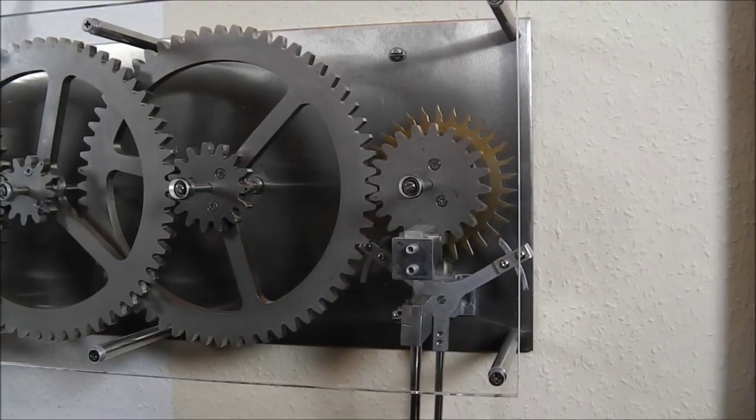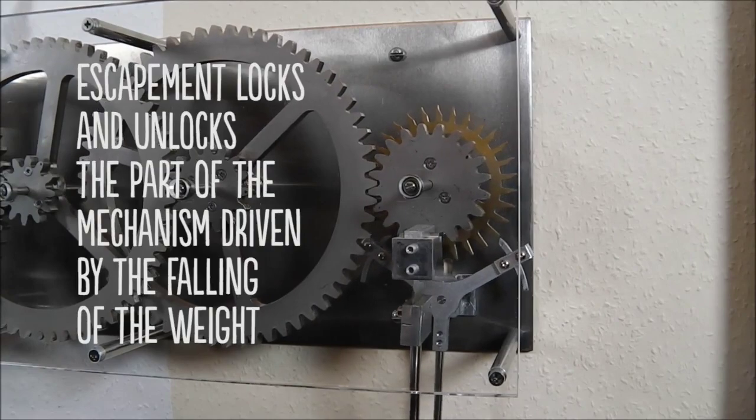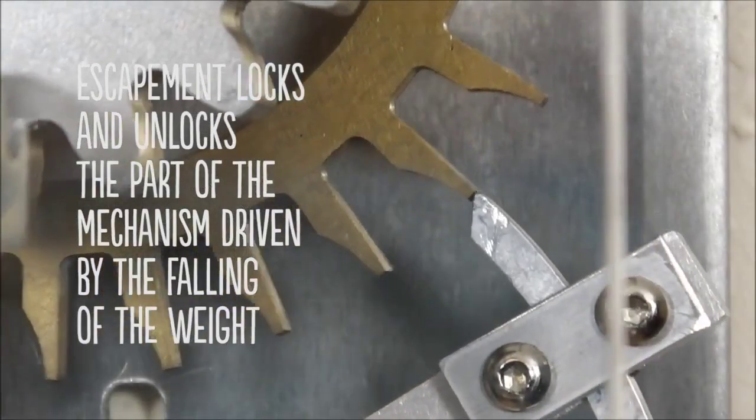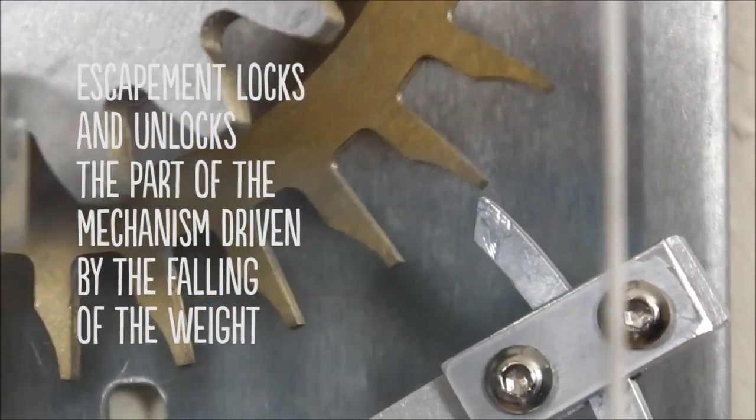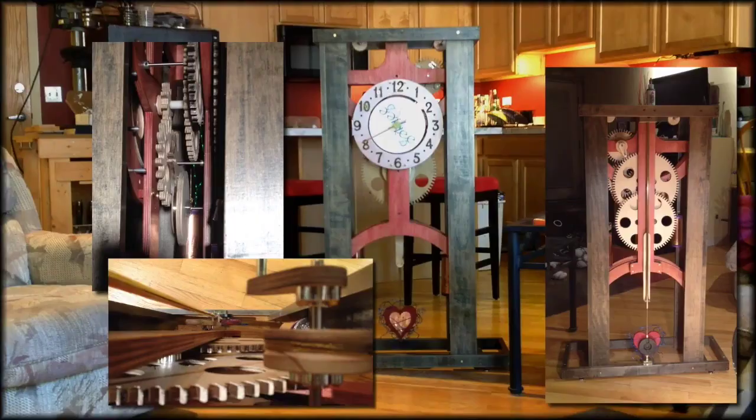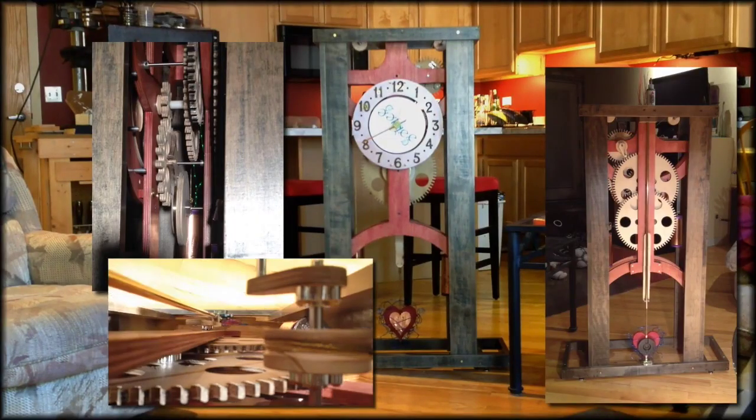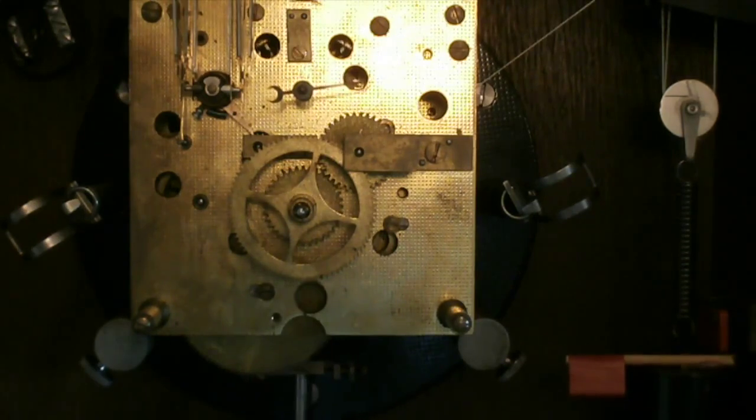It moves a lever called an escapement, which locks and unlocks the part of the mechanism driven by the falling of the weight. This allows the inner workings of the clock to move in a regular and concise manner.